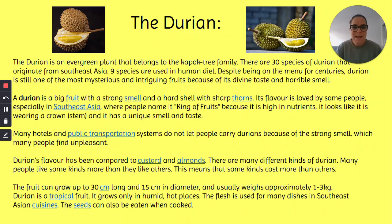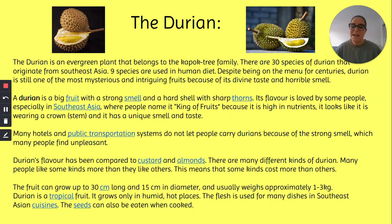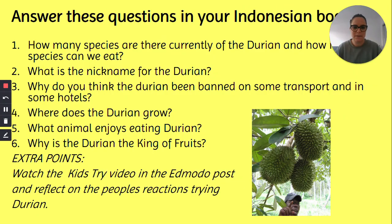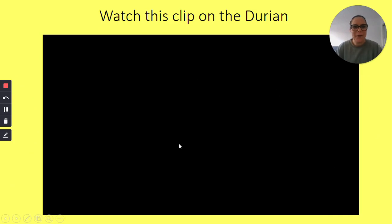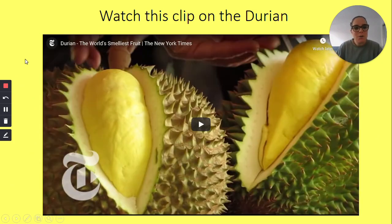Durians are a tropical fruit and they grow only in humid, hot places. The flesh is used in many dishes in Southeast Asia, and the seed can also be eaten and cooked as well. They actually grow durians up in the Northern Territory. Okay, we're going to watch a clip now on the durian, so watch closely.